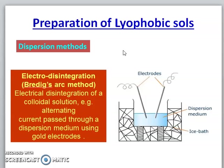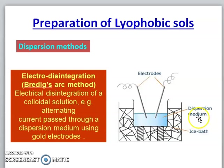The Bradic arc method is basically used when we need the sol of metals — gold or silver, for example. We use two electrodes of the metal whose sol we want to prepare, and place them into a beaker or any container filled with the dispersion medium. When high electricity is provided to the electrodes, an electric arc is generated between them.